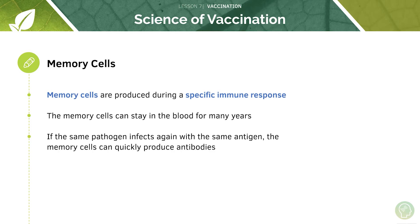This is why with some diseases such as chicken pox, once you get it as a child you don't usually get it again in life, even though you're exposed to the chicken pox pathogen multiple times. It's because of these memory cells that stay circulating in our blood after our primary exposure to the chicken pox pathogen.